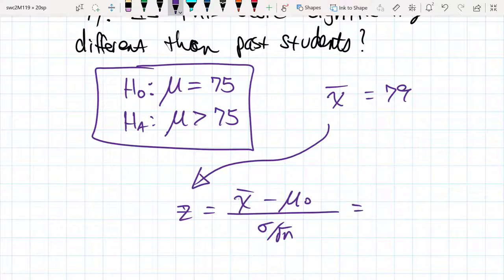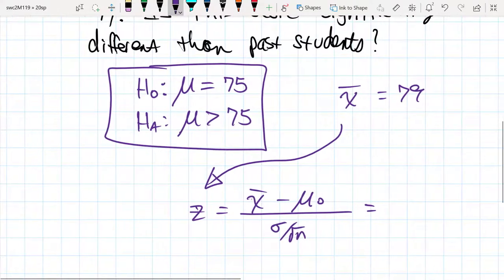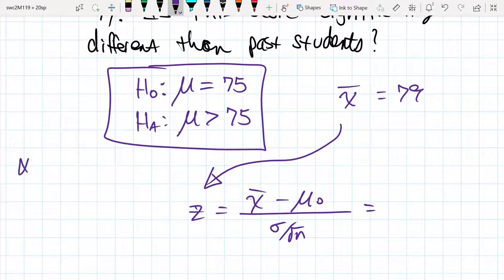If we plug these values in here, at what level of significance? The level of significance which we're going to make our decision is 5%. 5% is the level of significance.